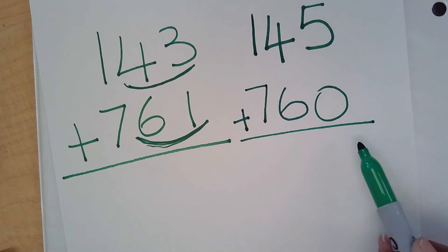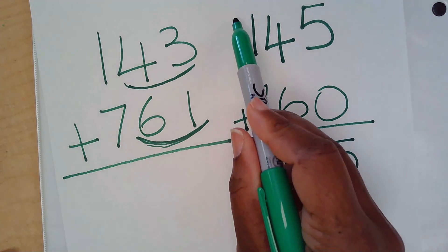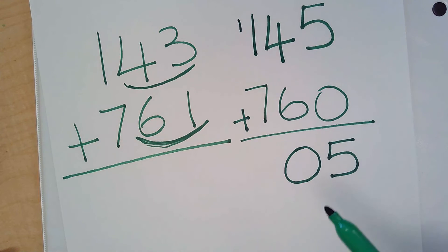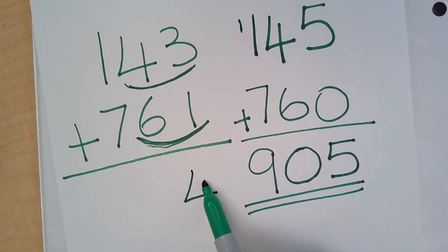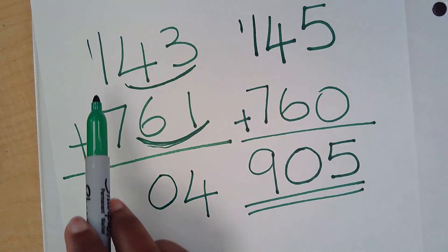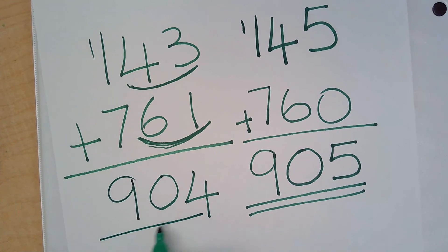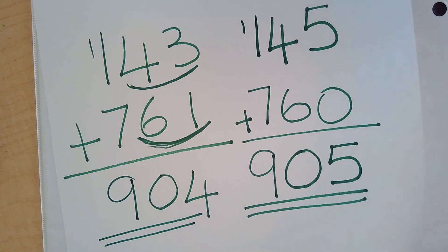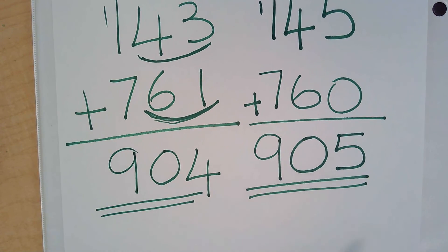5 plus 0 is 5. 6 plus 4 is 10. I carry my 1. 7 plus 1 is 8. 8 plus 1 is 9. That would be our answer. Now let's solve it with the exact numbers. 3 plus 1, that's 4. 6 plus 4, that's 10. 7 plus 1 is 8, and 8 plus 1 is 9. And look at that. Do you see? Both numbers are very close to each other. This is using the exact and this is with using compatible numbers.